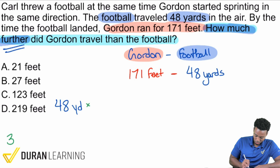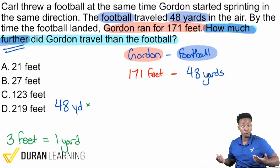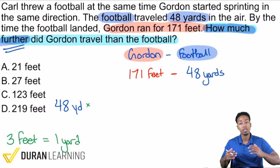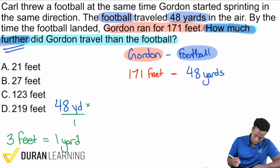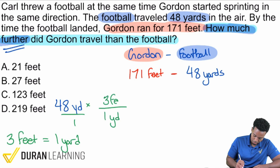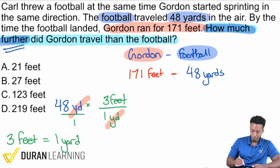The conversion factor is 3 feet equals 1 yard. When you apply the conversion rate, what you want to get rid of needs to be on the opposite end. Since we have yards on top, we'll put 1 yard on the bottom and 3 feet on top — you're just copying the conversion rate as a fraction. Yards cancel out, so to turn 48 yards into feet, we're just multiplying by 3.